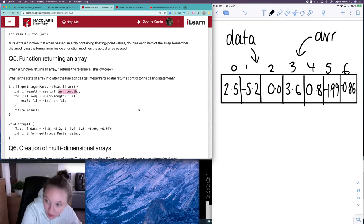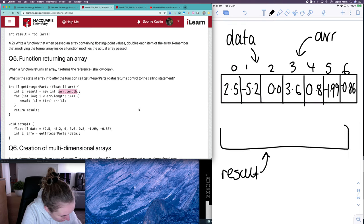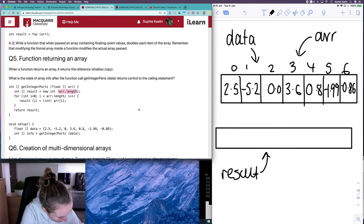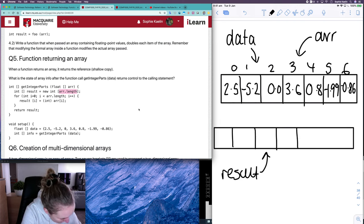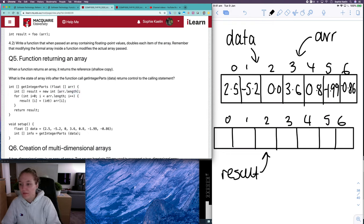So I've got result, which is pointing to this array here and it has seven places. and these will all be integers.